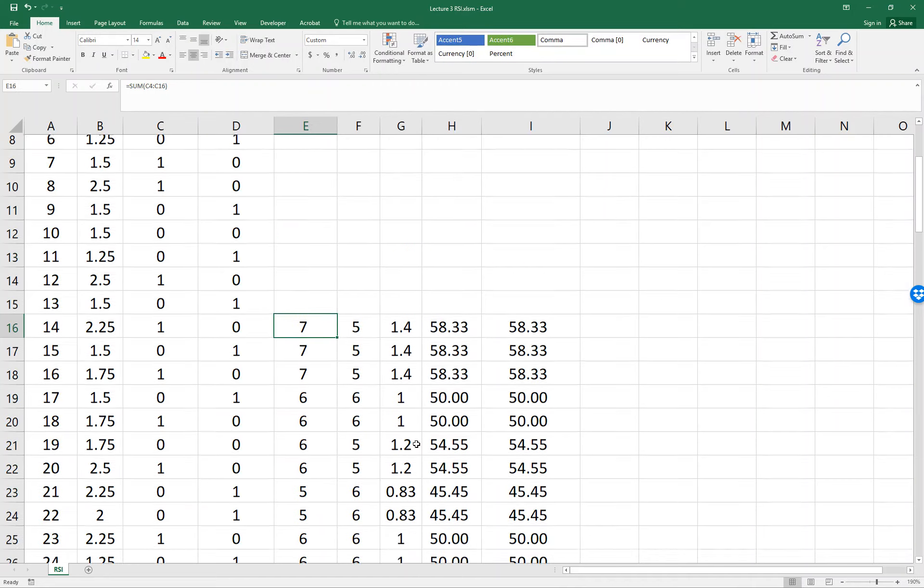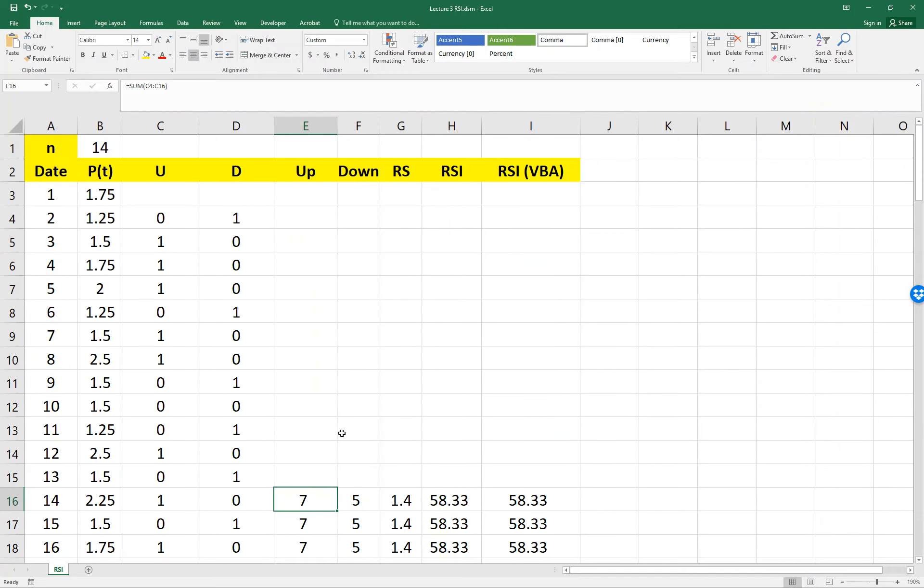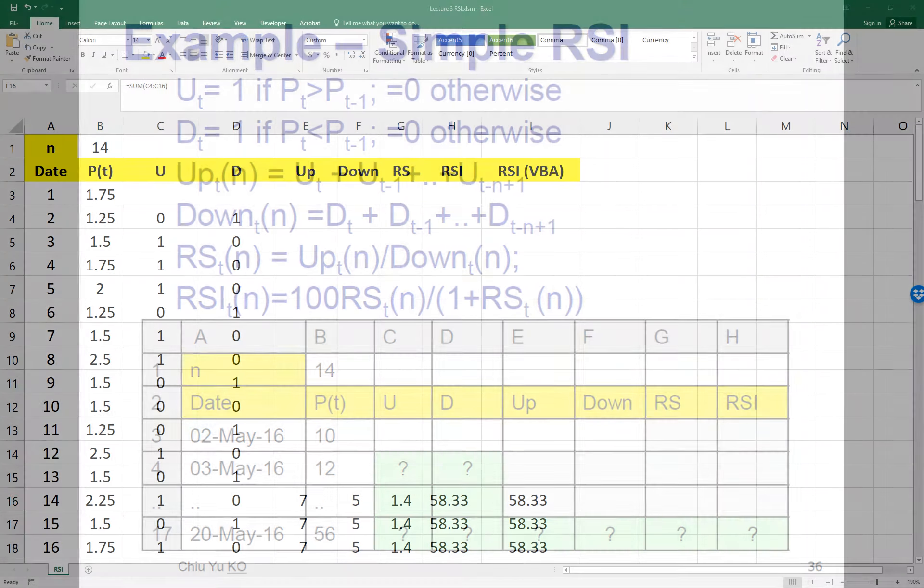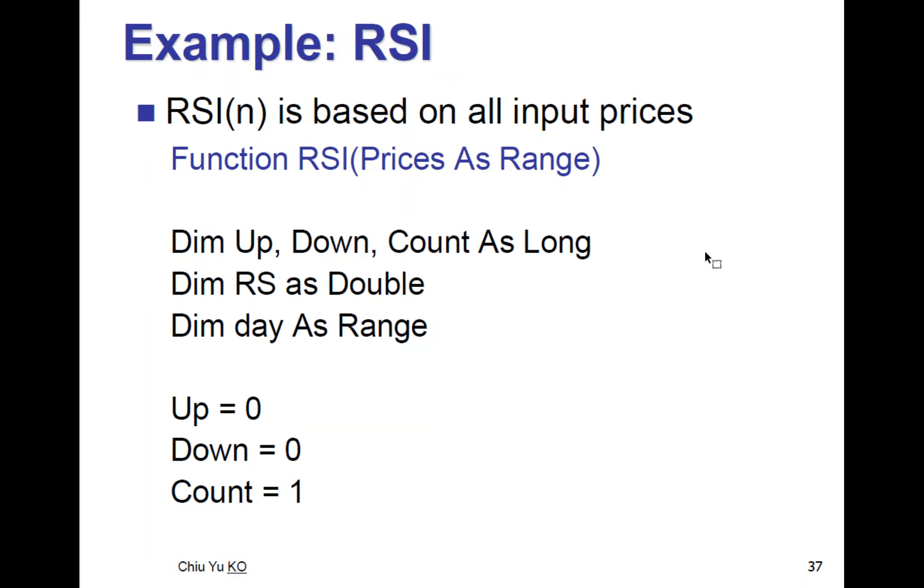And here we want to check, we want to remove these columns and do it by one single column RSI VBA. So how do we do that? So it's very simple. We just use the price range as input.